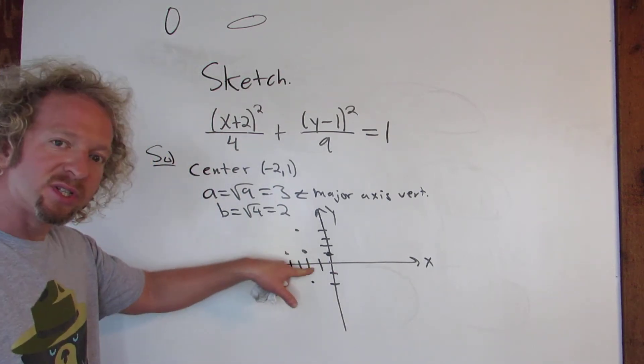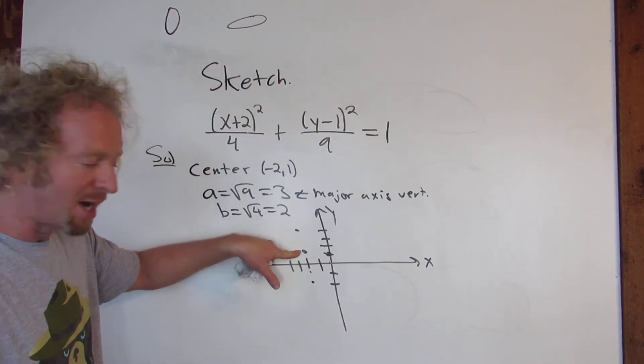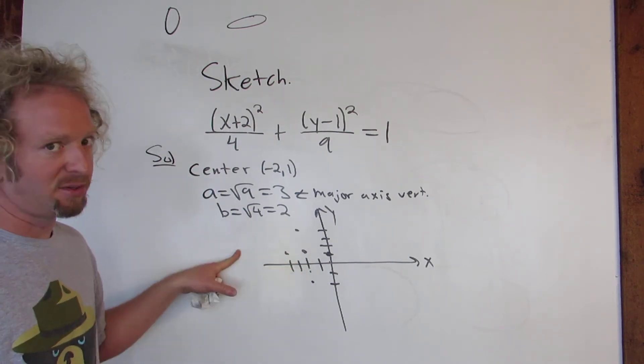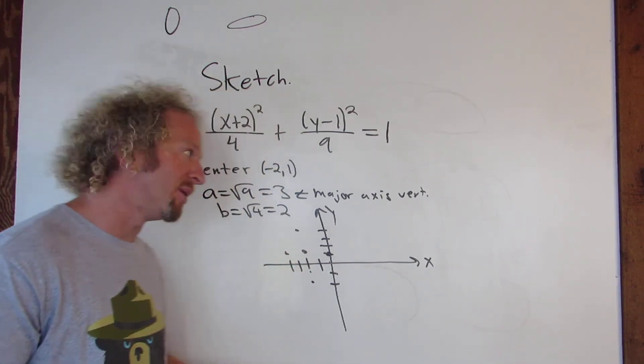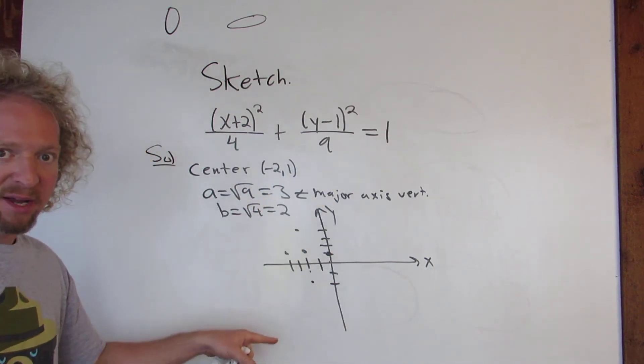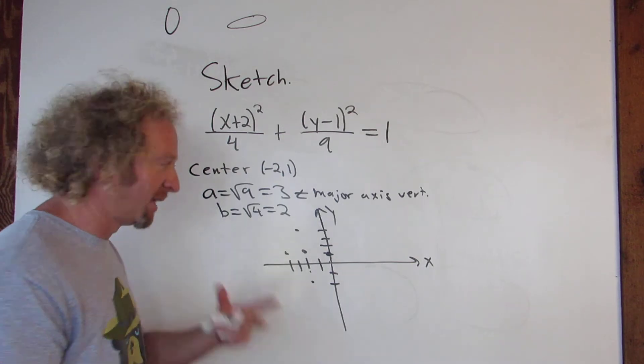So again, from the center, which is negative 2, 1, you go up and down by 3. So 1, 2, 3, and then 1, 2, 3. Then left and right by 2. And the reason we go up and down by 3 is because the bigger number is under the y. So we go up and down by a. If the bigger number is under the x, then you go left and right by a.